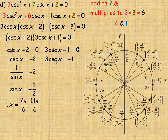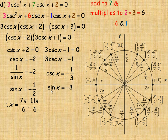From 3 csc x + 1 = 0, subtracting 1 and dividing by 3 gives csc x = negative 1/3. Taking the reciprocal of both sides, sine x equals negative 3. However, the sine function is always between negative 1 and positive 1, so there is no solution to sine x = negative 3. You cannot find negative 3 on the unit circle.